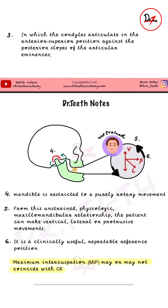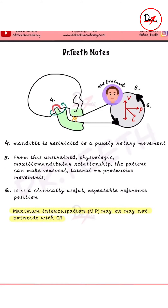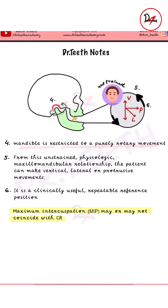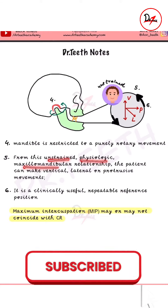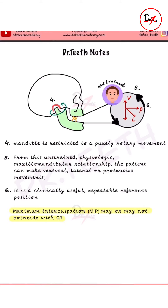Moving forward, it talks about the movement the mandible can make. The mandible is restricted to a purely rotary movement. Then, from this unstrained physiologic maxillomandibular relationship, the patient can make vertical, lateral, or protrusive movement.